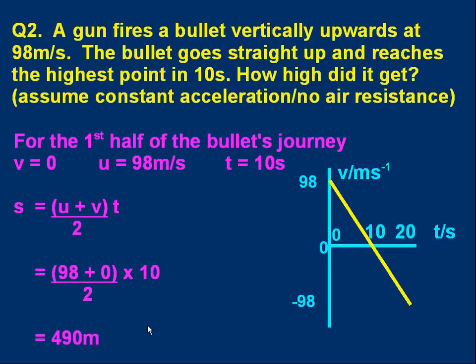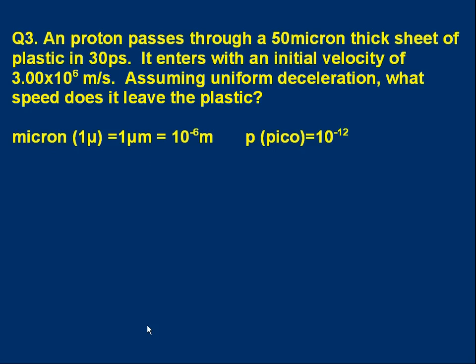Let's do one final, slightly harder problem. A proton passes through a 50 micron thick sheet of plastic in 30 picoseconds. It enters with an initial velocity of 3.00 times 10 to the 6 meters per second. Assuming uniform deceleration, what speed does the proton leave the plastic? Now, if you're not familiar with these terms, let me go over them.